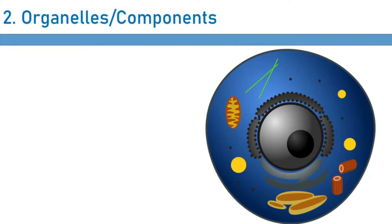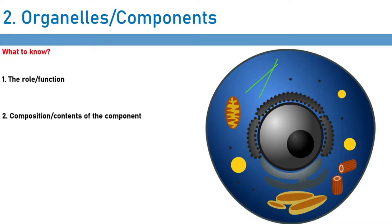For the IMAT, the most important thing is focusing on the organelles. What do we want to learn about them? First, we want to know the role and function of each organelle or cell component — cells don't have these for fun, they actually perform something. Very important for the IMAT: you want to know the composition and contents of that component. The IMAT loves asking what you can find in a given organelle — can you find protein, nucleic acids? I'll cover all contents relevant to the IMAT; if I skip something, it's not necessary.